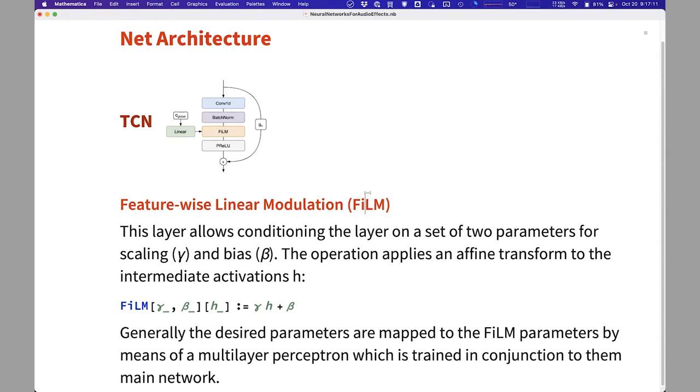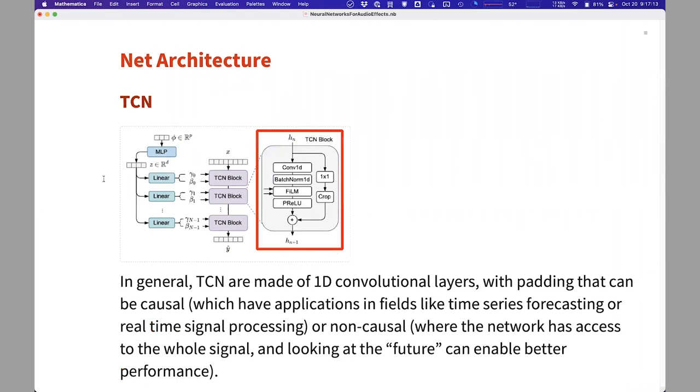transforms it to a vector that is then dimension reduced and scaled for each of the TCN blocks. And you can see how this works here. So these are the values of the parameters. This outputs a giant vector.